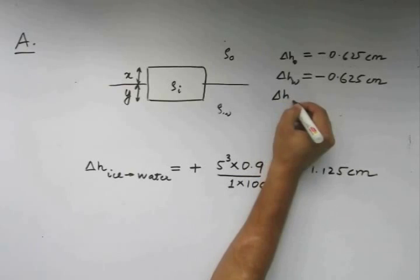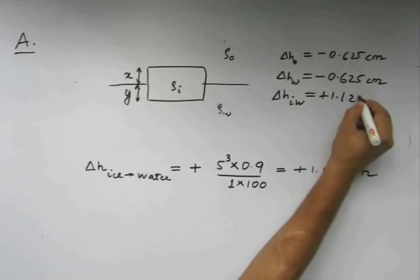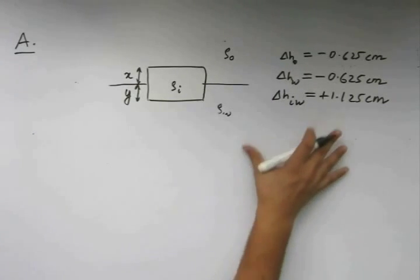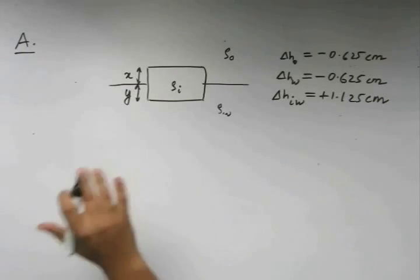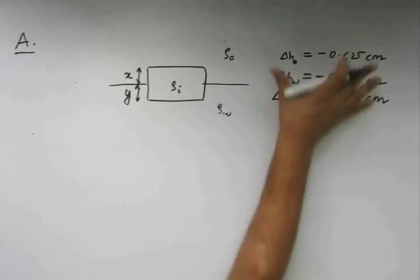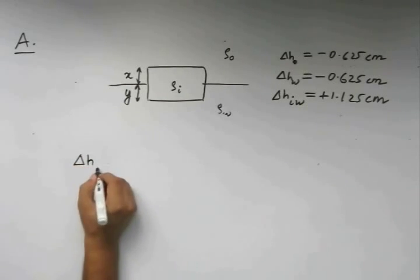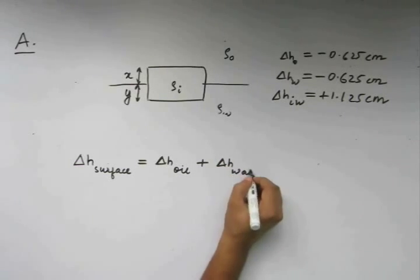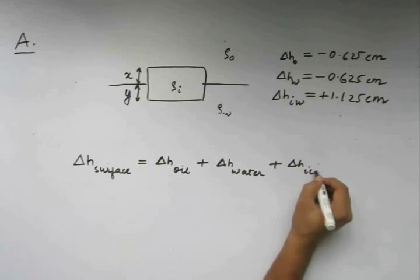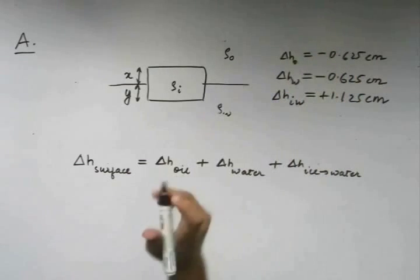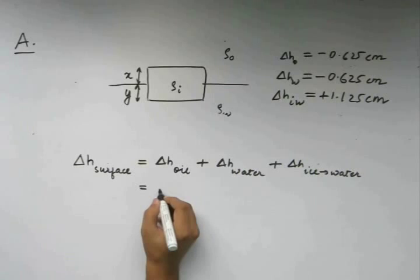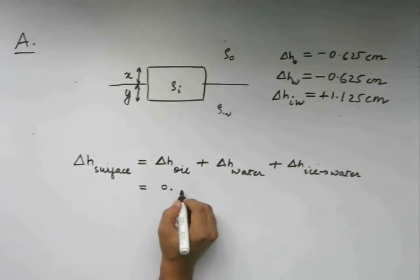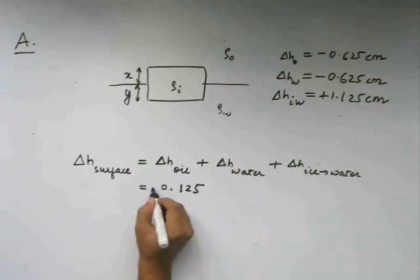So the ΔH_ice-water is equal to plus 1.125 centimeters. Now, to find the net height drop or the net height change of the top surface what we stated in our problem initially, to find that what we need is basically the addition of these quantities. So that ΔH_surface is going to be ΔH_oil which is negative plus ΔH_water which is also negative plus ΔH_ice which got converted to water. If we add all these up,